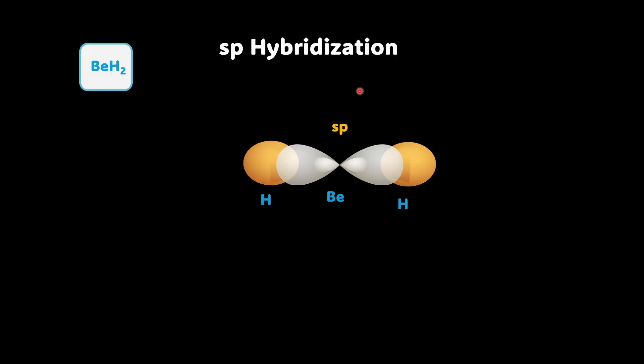Now coming back to this whole final BeH2 structure. This is how the geometry looks like. You can see that we have made use of two sp hybrid orbitals, each of these singly occupied. These are the two electrons that we have. So each of these singly occupied sp orbitals overlap with the singly occupied 1s orbitals of hydrogen having electrons in exactly opposite direction.